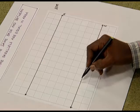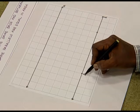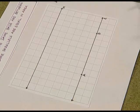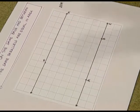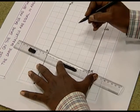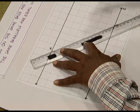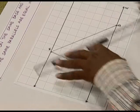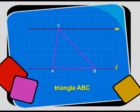Now to construct one triangle, I take two points on line L and name them A and B. For the third point, I take a point on line M and name it C. Now we have triangle ABC in between two parallel lines L and M.